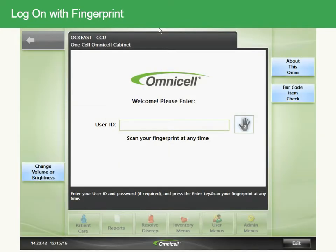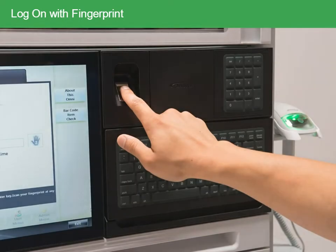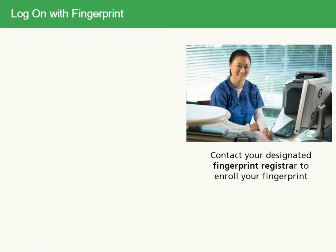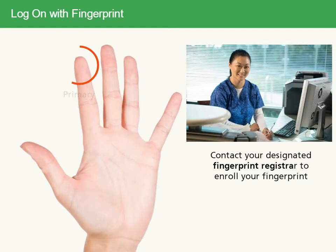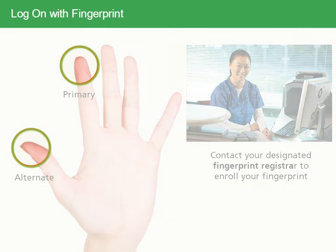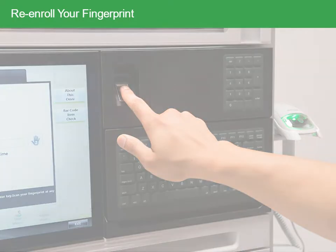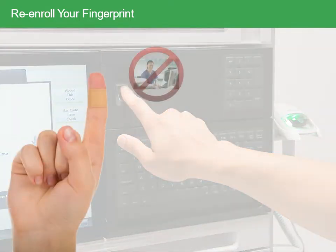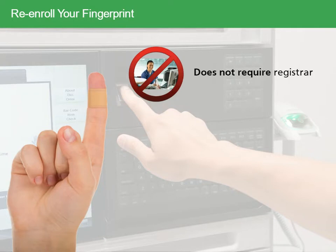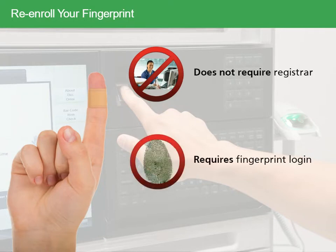Let's have a closer look at logging in with your fingerprint. If you have never been enrolled, contact your designated fingerprint registrar to help you enroll your fingerprints. You can enroll two fingers — a primary and an alternate — and use either to log on. You may need to re-enroll your fingerprint, for example if you cut or burn a finger. You don't need a registrar to re-enroll, however you must access the cabinet with a fingerprint to do so.